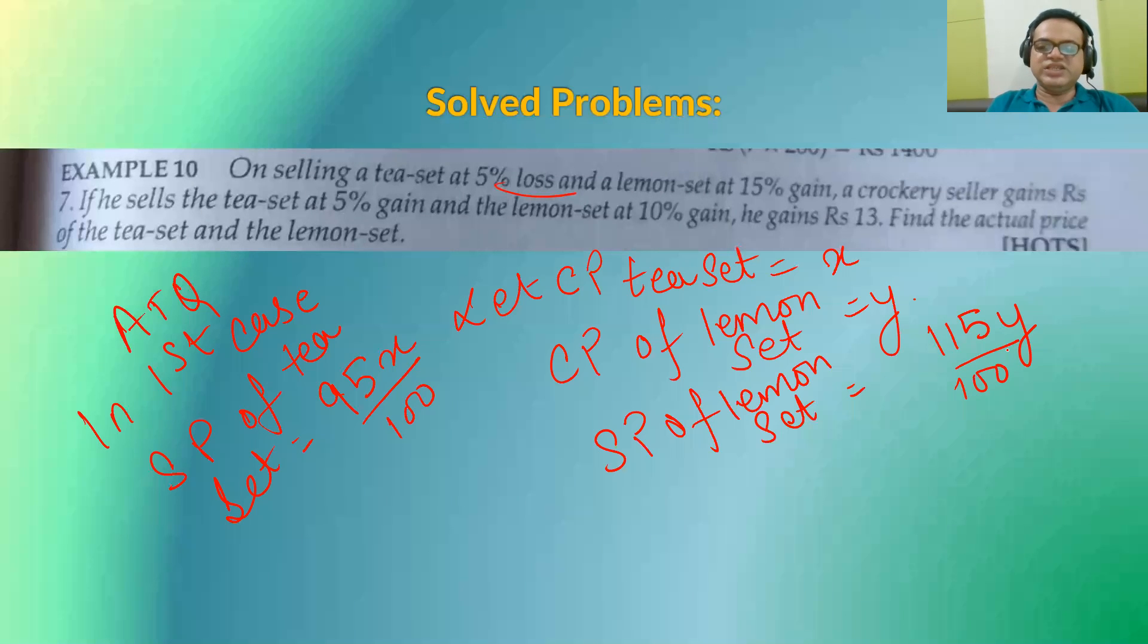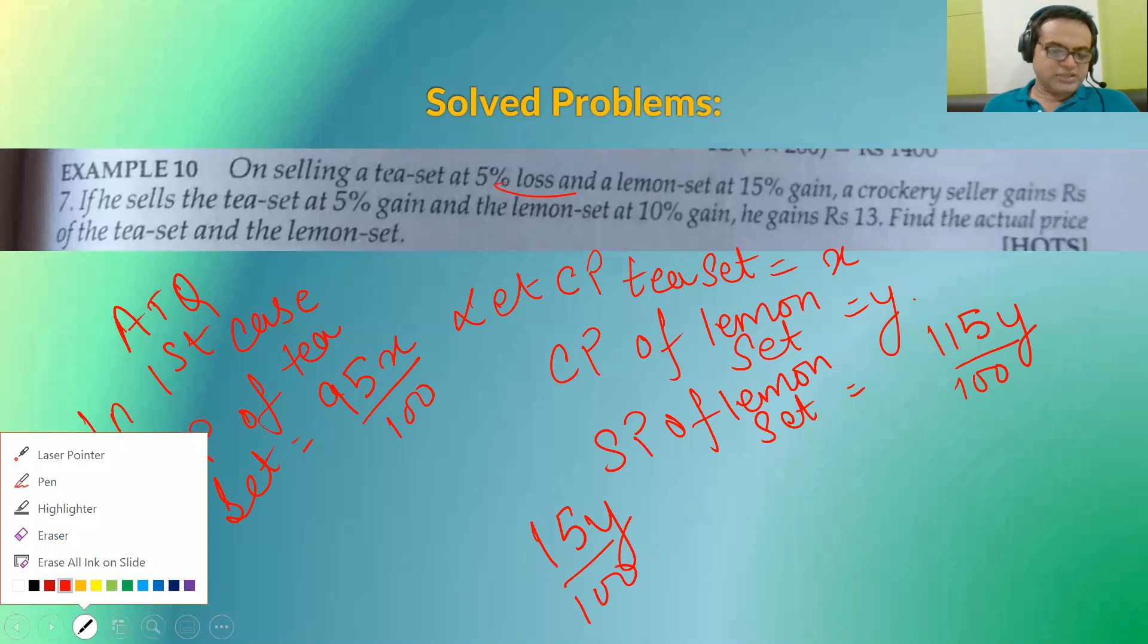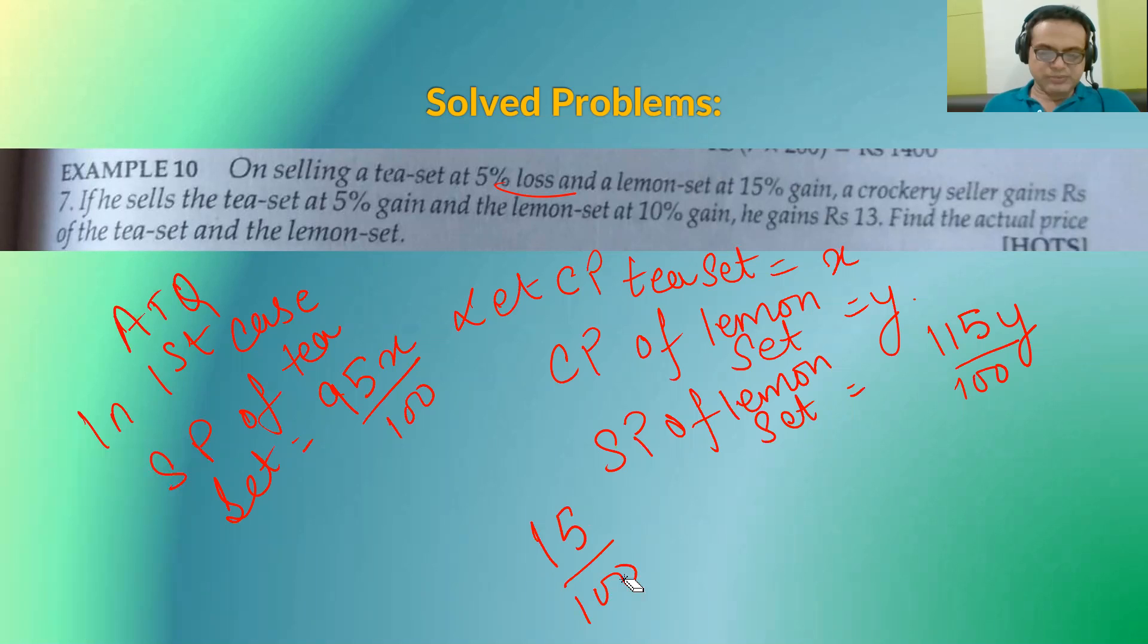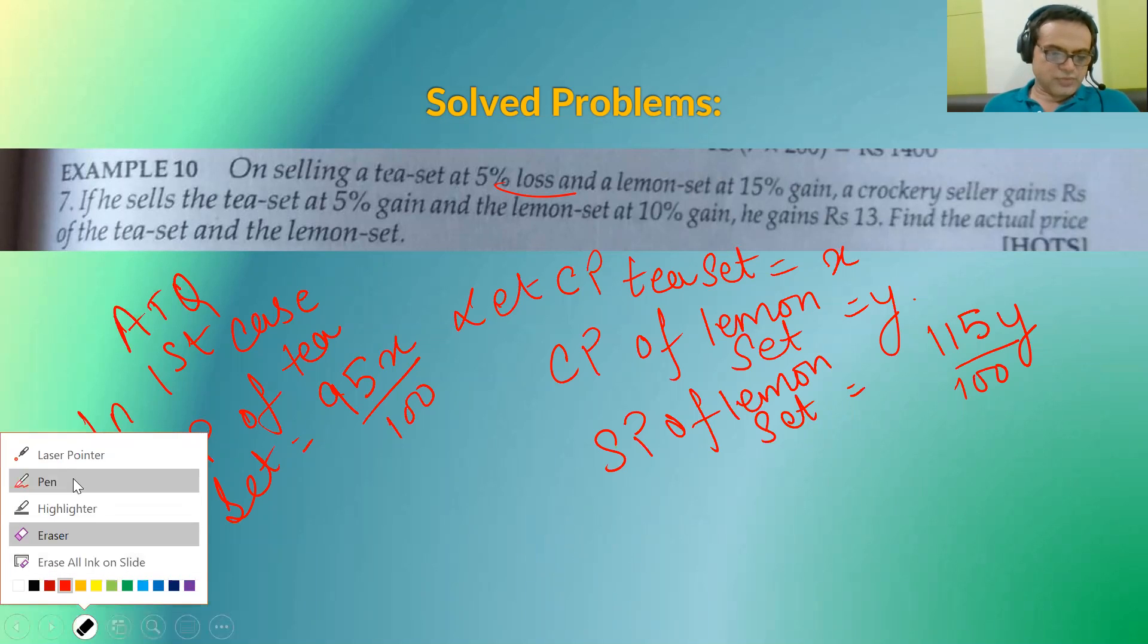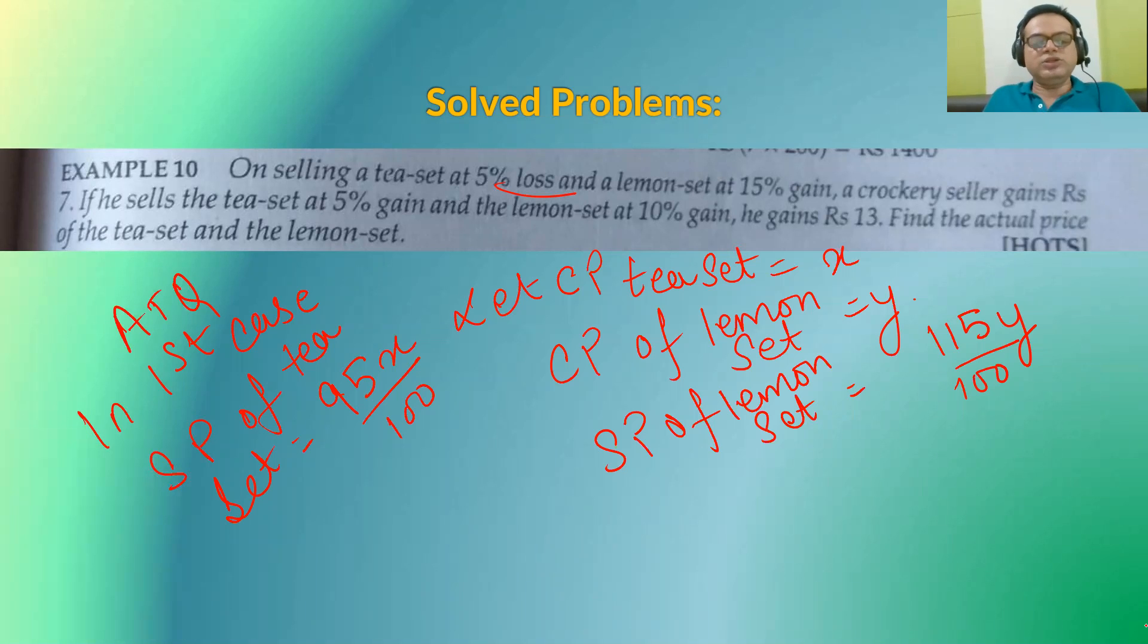Now, see, what is the profit? Profit is selling price minus cost price and loss is cost price minus selling price. So here, what happened in the first case?